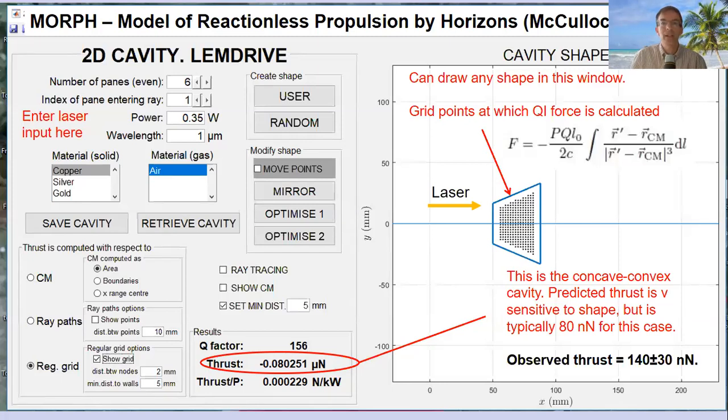In Plymouth we've been developing a model called MORPH, Model of Reactionless Propulsion by Horizons. You can input certain things. On the right you can draw a cavity, whatever cavity shape you want. Here you input laser power, which is 0.35 watts in this case, the laser wavelength, one micron in this case, and the material of the cavity, which is copper in this case.